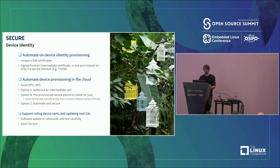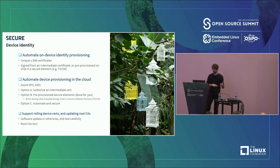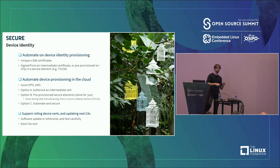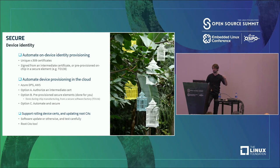For device identity, we should use X.509 certificates. The easy way is to create them and sign them from an intermediate certificate derived from your root certificate. The alternative is to use secure elements that are pre-provisioned with that identity — a service manufacturers can provide where you get a secure chip that's pre-loaded with a unique certificate, which you can provision in Azure or elsewhere. The latter is a bit more secure and less work on your part, at a cost.